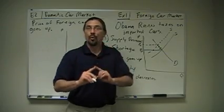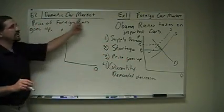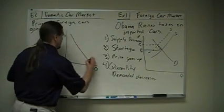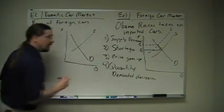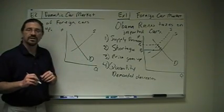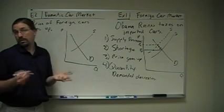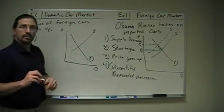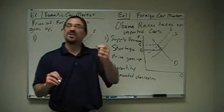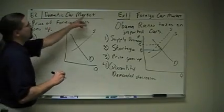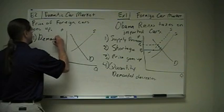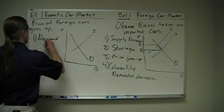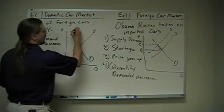And that's a good thing, because what happens? That takes us to example number two. Let's look at the domestic car market and assume that the price of foreign cars goes up. Here's our supply and our demand. What's the relationship between domestic cars and foreign cars? They're substitutes. If you're not going to buy a foreign car, you're going to buy a domestic one. So what happens when the price of a substitute goes up? Price of a substitute is a non-price determinant of demand. Therefore, our demand for domestic cars increases.